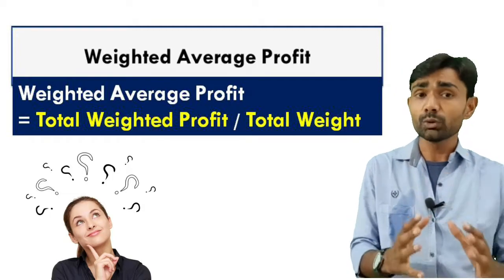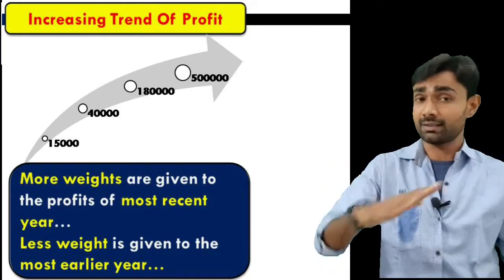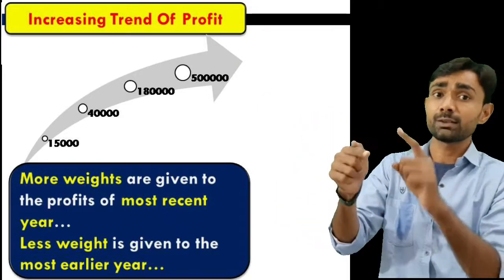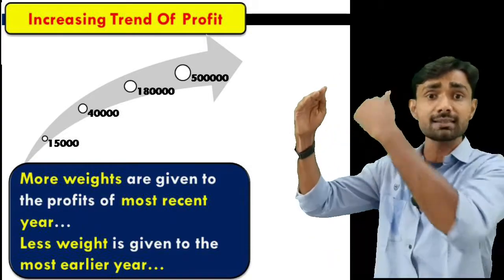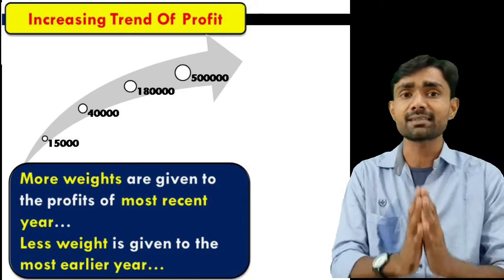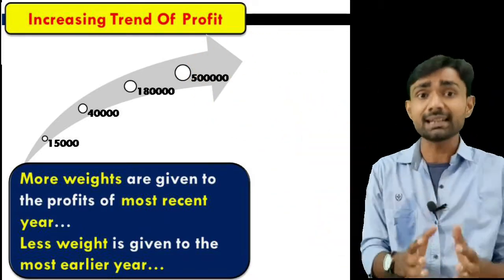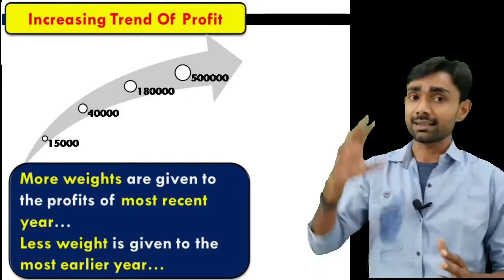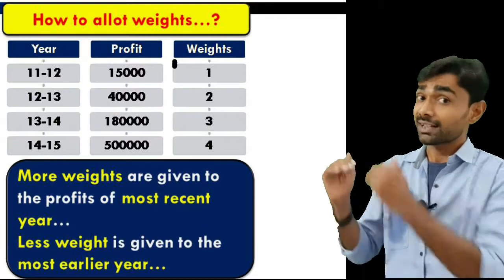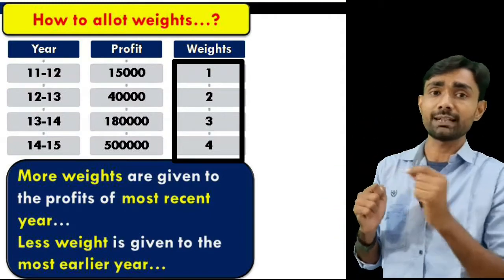In this method, there is a mathematical mechanism — a rule. The rule is that as each year's profit is increasing on average, the oldest year's profit will be given the least weight, and the most recent year's profit will be given the highest weight. For example, the first year's profit gets weight 1, second year gets weight 2, third year likewise. If you consistently have profits over 5 years, we will give weights 1, 2, 3, 4, and 5.